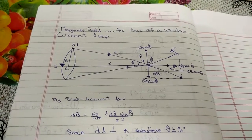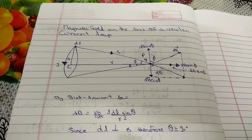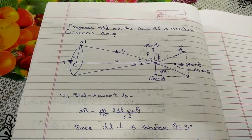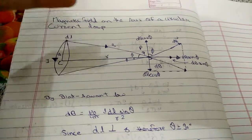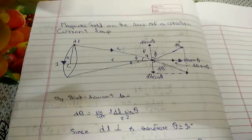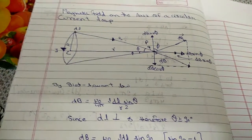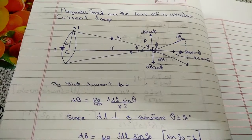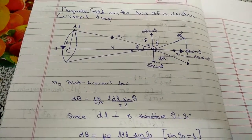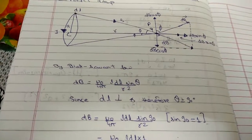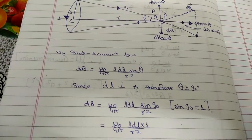By Biot-Savart law, we note that magnetic field is equal to mu0 times idl sin theta upon 4 pi R squared. Since it is seen from the diagram that dl is perpendicular to s, therefore theta will be 90 degrees. By placing the value of theta in Biot-Savart law, we get mu0 idl upon 4 pi R squared.